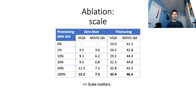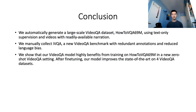To sum up, we automatically generate HowToVQA69M, our large-scale video QA dataset, using language models trained on text-only annotations and narrative videos. We show that our video QA model trained on HowToVQA69M can effectively tackle video QA without using any manual supervision of visual data. After fine-tuning, our model improves the state-of-the-art on four video QA datasets. We further validate our approach on IVQA, a new benchmark we manually collect with redundant annotations and reduced language bias. Thank you for watching, and I invite you to read our paper and check our webpage for further details.